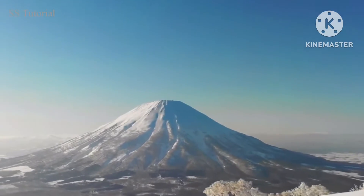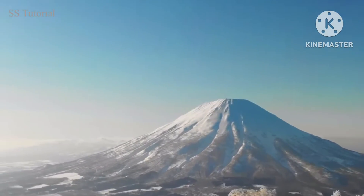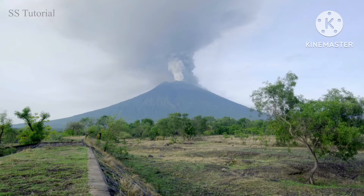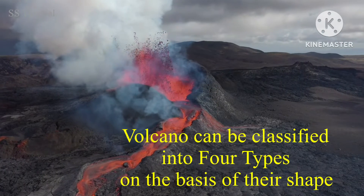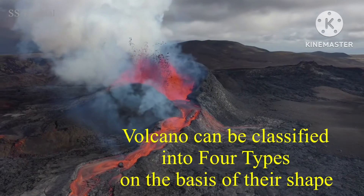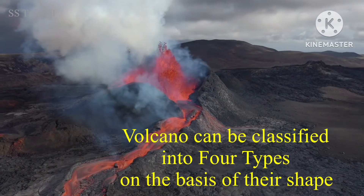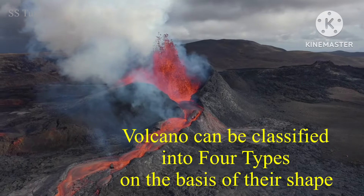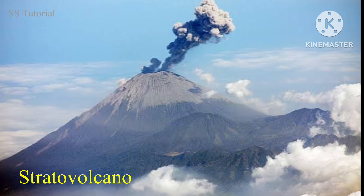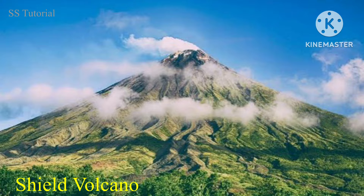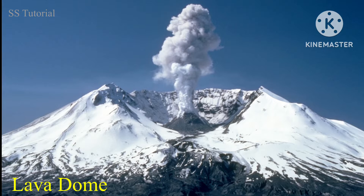In our earth there are thousands of volcanoes and all are somewhat unique. But if we generalize, then most of these volcanoes can be classified into four types: cinder cone volcanoes, composite volcanoes or strato volcanoes, shield volcanoes, and lava dome volcanoes.